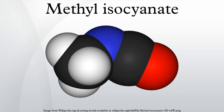Methylisocyanate is also manufactured from N-methylformamide and air. In the latter process, it is immediately consumed in a closed-loop process to make methomyl. Other manufacturing methods have been reported.